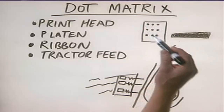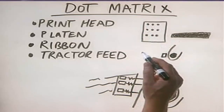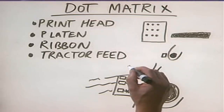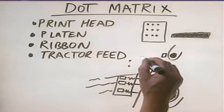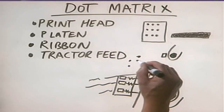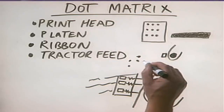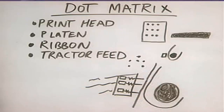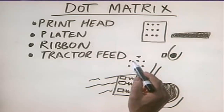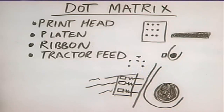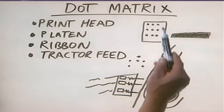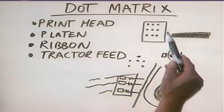By using different varieties of patterns, we can create different letters. For instance, with a nine-pin head, if we wanted to make the letter A, we would fire specific pins to form that shape. As you can probably see, using only nine pins, the letters really aren't that great a quality. The more pins you have in the print head, the better the quality looks.